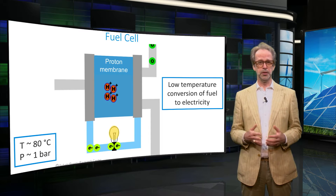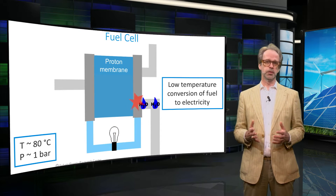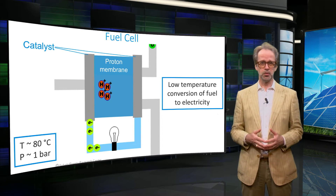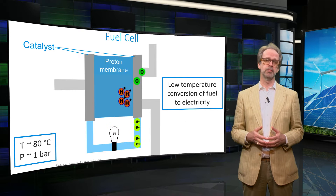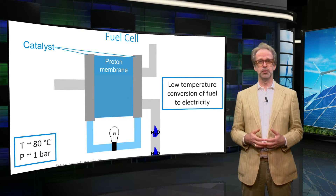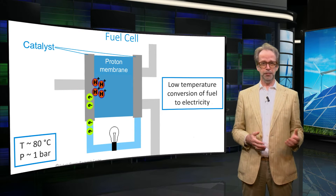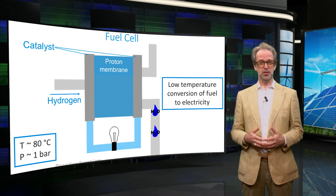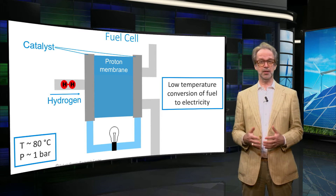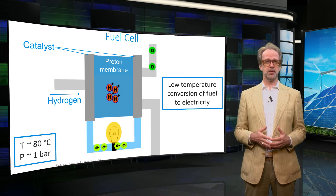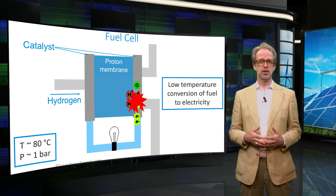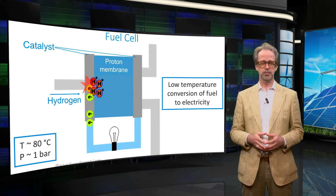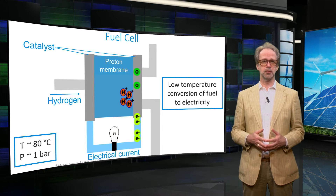The fuel cell consists of two porous catalytic electrodes separated by a so-called proton exchange membrane. This is a polymer which is able to conduct protons. On the left, hydrogen gas enters the fuel cell. Hydrogen is split into protons and electrons at the catalyst. Only the protons can pass through the membrane, so the electrons are forced to go through the electrical circuit outside of the fuel cell. This in fact provides the electrical power.